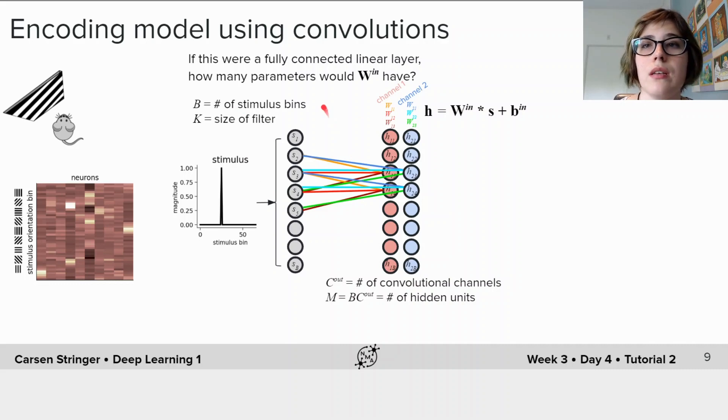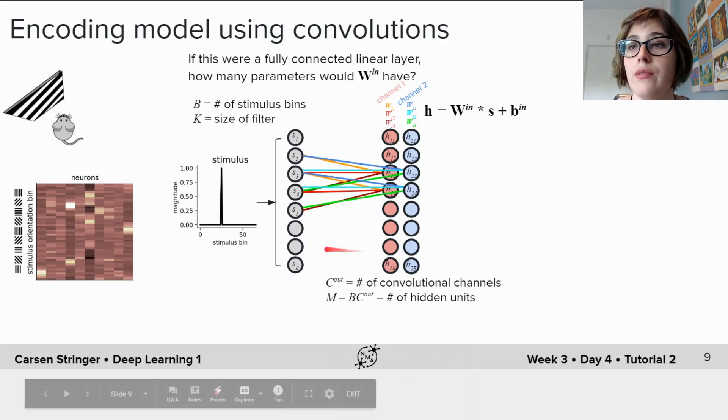So you can discuss this with your group: in what situations in particular is there a big mismatch with how many parameters you need for a linear layer versus a convolutional layer? And in most cases the number of parameters you need for the linear layer is much greater, and it becomes even substantially greater as the dimensionality of your stimulus increases because the number of weights you need is b times b times C_out, which is b squared.